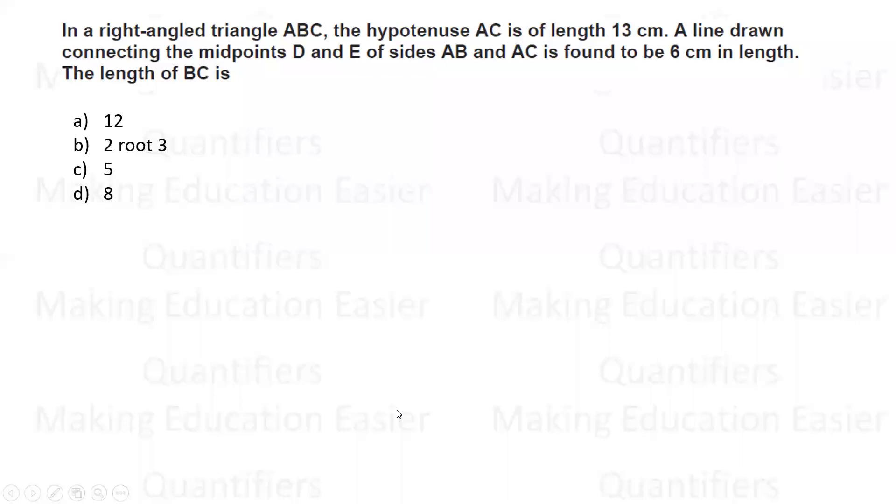The question says in a right angle triangle ABC. So let us draw a right angle triangle ABC. AC is the hypotenuse, so angle B is 90 degrees. And AC is given as 13.